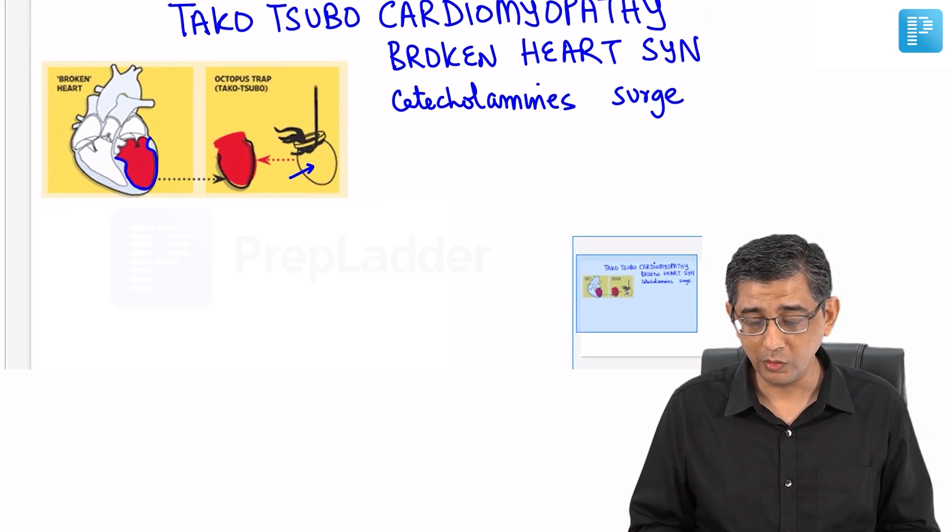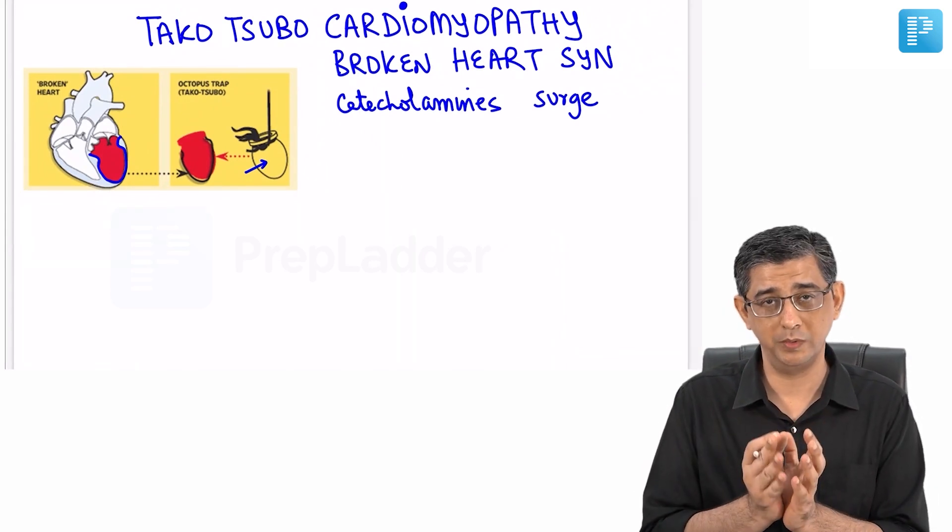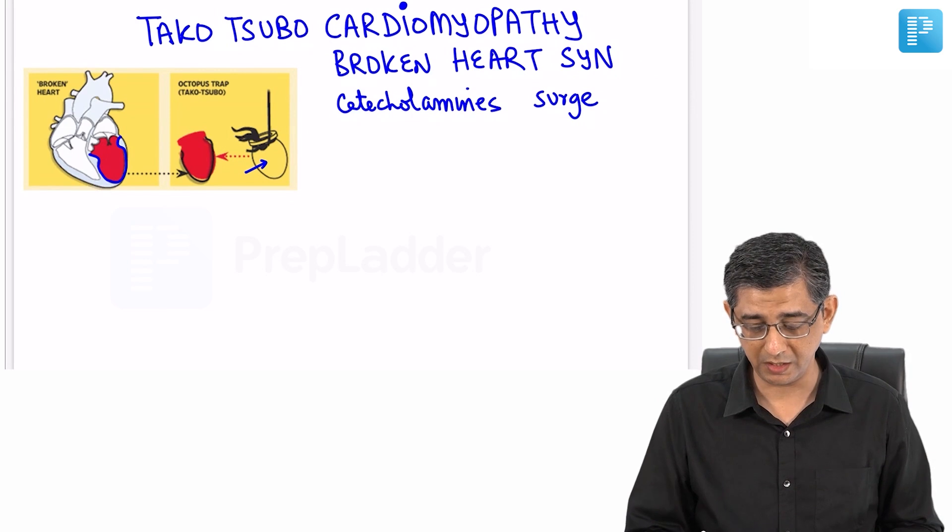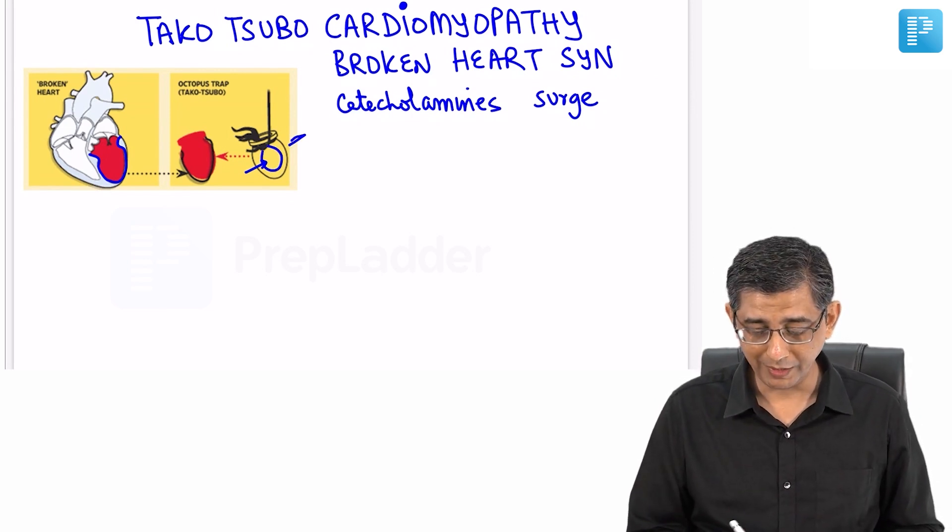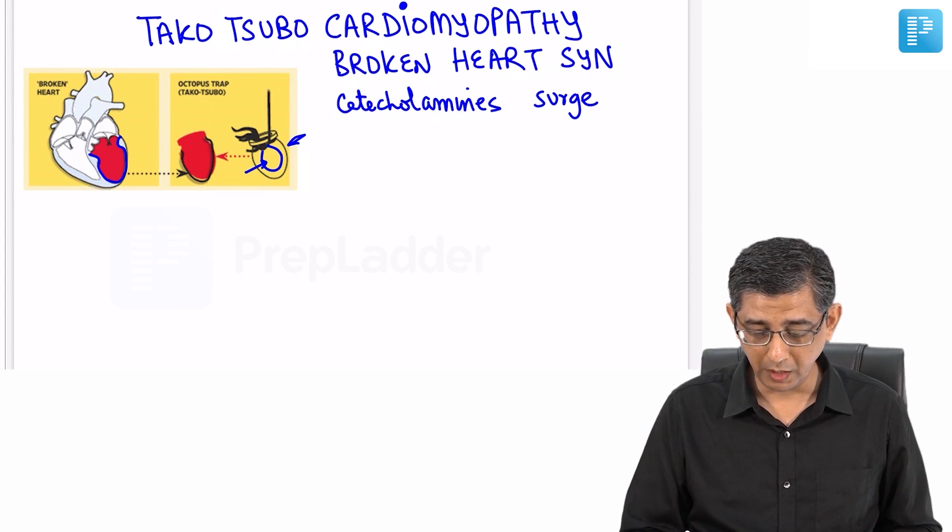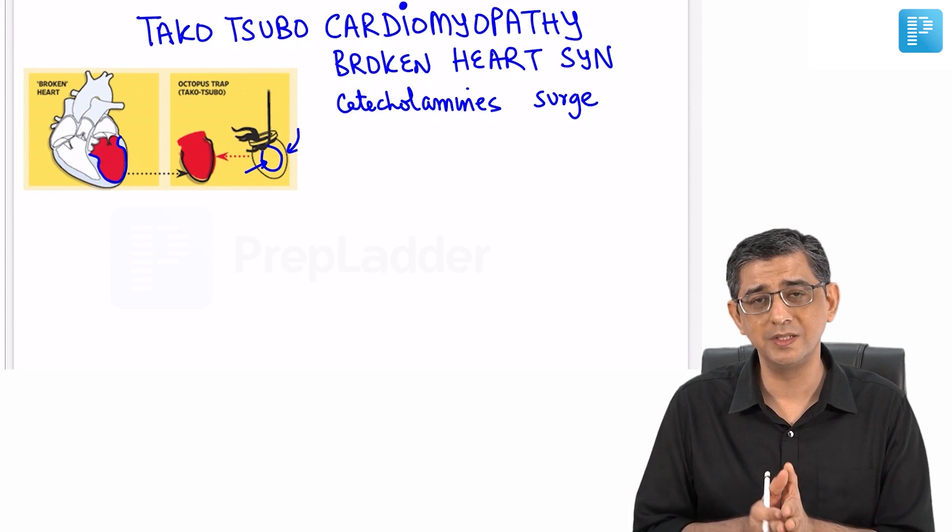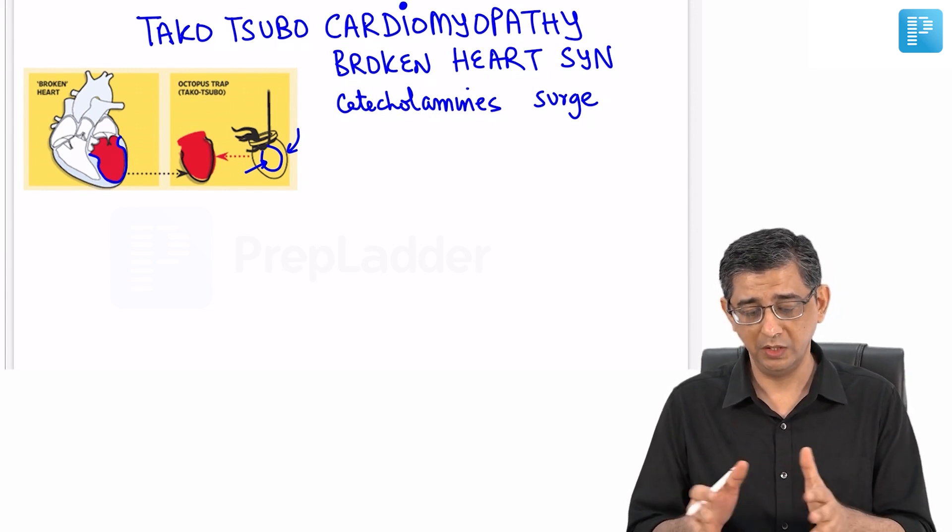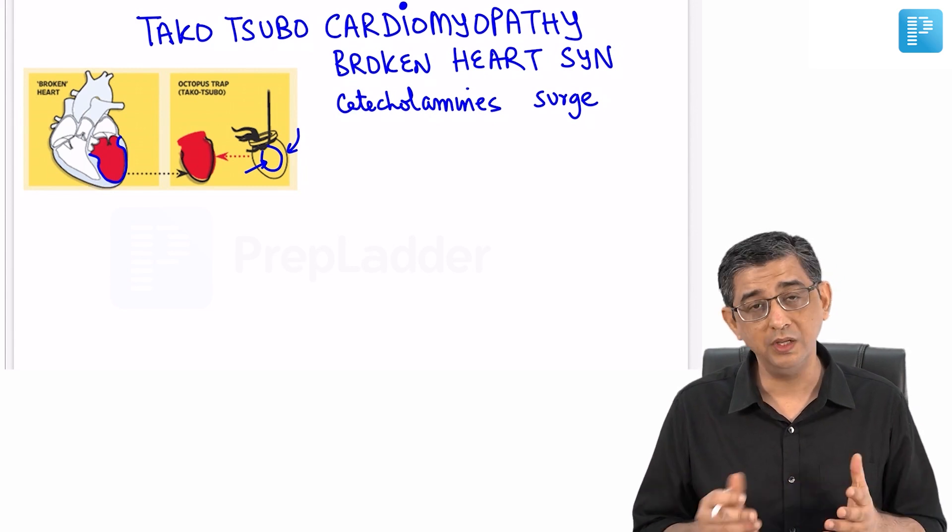Takotsubo in Japanese basically means a jar that is used to trap an octopus. The octopus head once it gets stuck in this area, it will not be able to come out. So this ballooning that is occurring of especially the apical part of the heart, that's why the name given is octopus trap slash takotsubo cardiomyopathy.